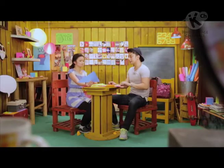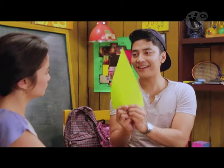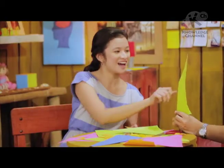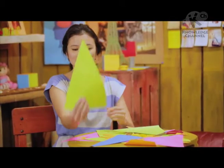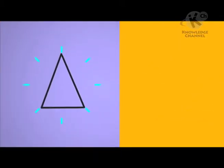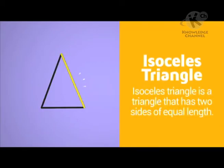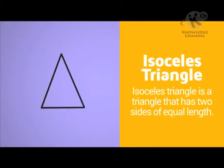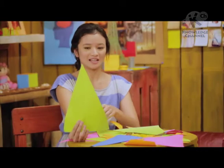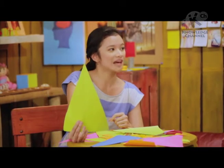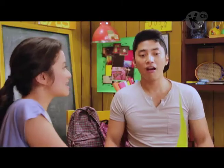Scalene Triangle is a triangle with no equal sides. Eto naman — anong tawag sa triangle na ito? Madali lang yan. Ay, Isosceles Triangle! It has two sides of equal length. Basta meron two sides na equal, sige yan.